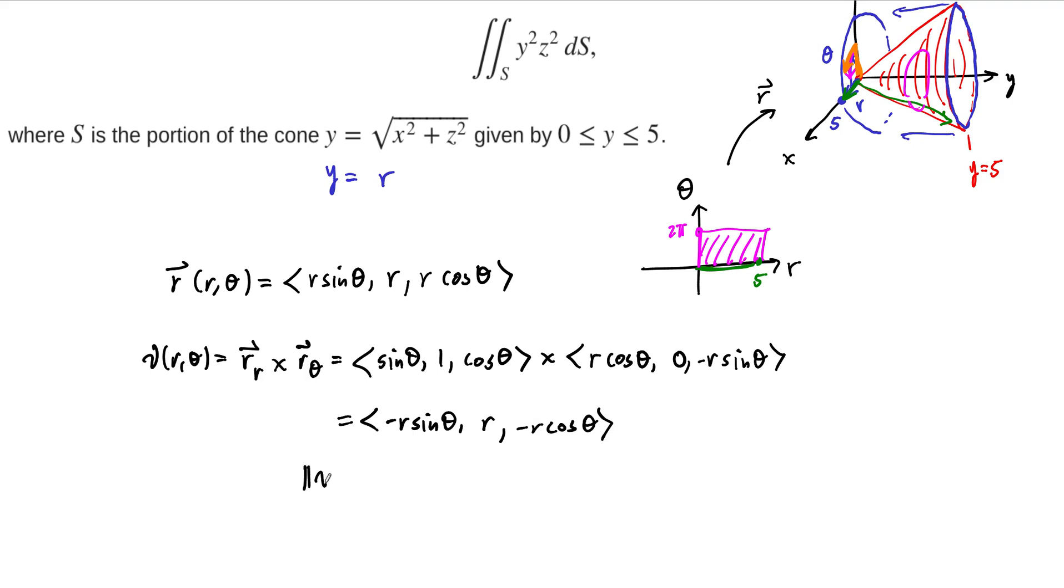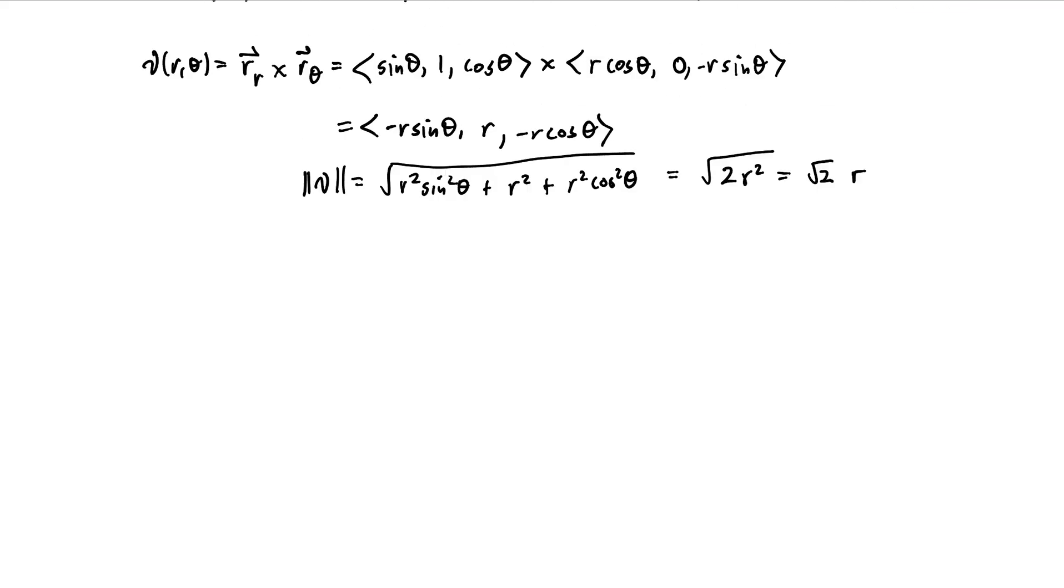And remember, when we integrate all this up, we need to know the length of nu. And so the length of nu is going to be the square root of the sum of the squares. So this is r squared sine squared theta, plus r squared, plus r squared cosine squared theta. So this is the square root of 2r squared, which is the square root of 2 times r. So that's the surface area element here, square root of 2 times r.